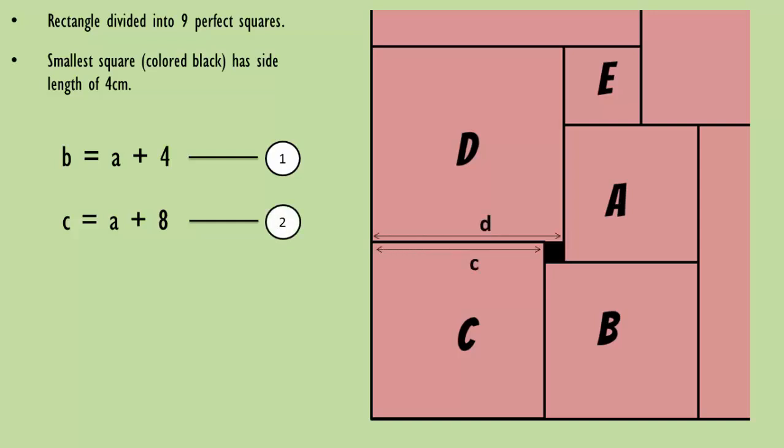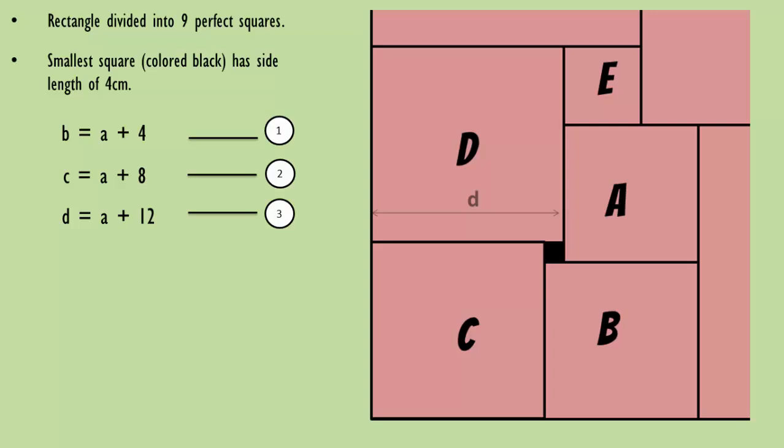Now, D equals C plus 4. Substitute the value of C, we get D equals A plus 12. After three equations, we have managed to indirectly compare side length D with side length A.